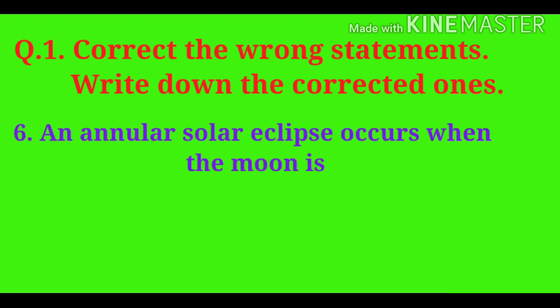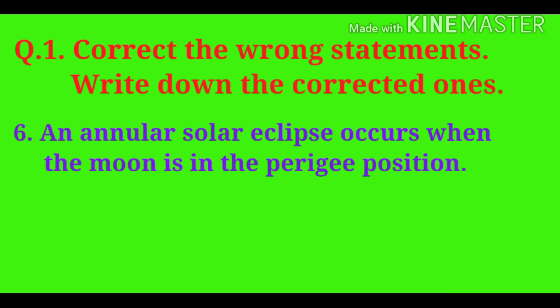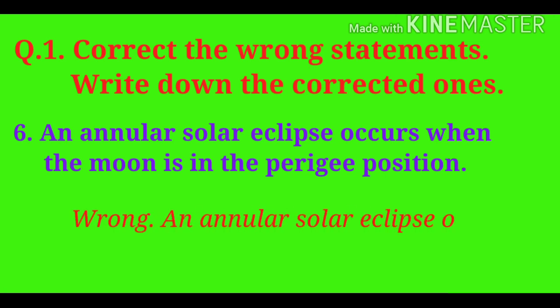Sixth statement: An annular solar eclipse occurs when the moon is in the apogee position.